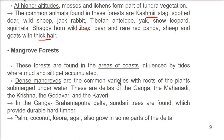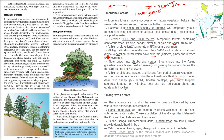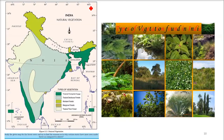In the Ganga-Brahmaputra delta, Sundari trees are found — that is why the area is called Sundarban. Sundari trees provide durable hard timber. Palm, coconut, and other species also grow in delta regions. The Royal Bengal Tiger is found here, along with turtles, crocodiles, gharials, and snakes. Gharials are the only species of crocodiles found in India.